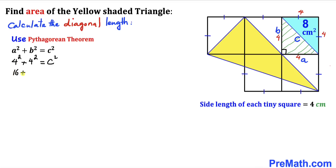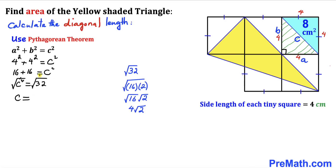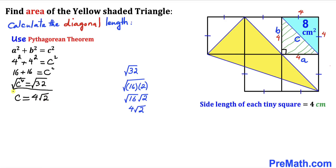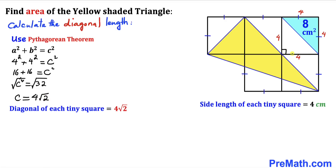Simplifying: 16 plus 16 equals c squared, so c squared equals 32. Taking the square root on both sides and simplifying the square root of 32, it turns out to be 4 times the square root of 2. Therefore the diagonal of this tiny square is 4 times square root of 2 centimeters.